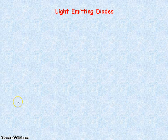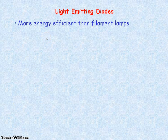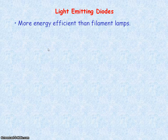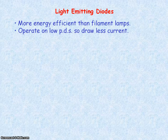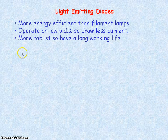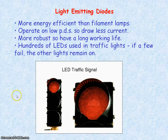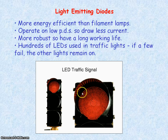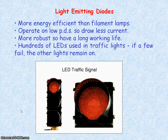Finally, let's look at some benefits of LEDs. They're more efficient than filament lamps, so less energy is wasted. They work with low voltages, drawing less current than a filament lamp, so they have lower energy requirements. They're also more robust than filament lamps, giving them a much longer working life. A common use of LEDs is in traffic signal lights — if one fails, the others will still remain on, so you don't have to replace them as often. This makes them more cost effective as well.